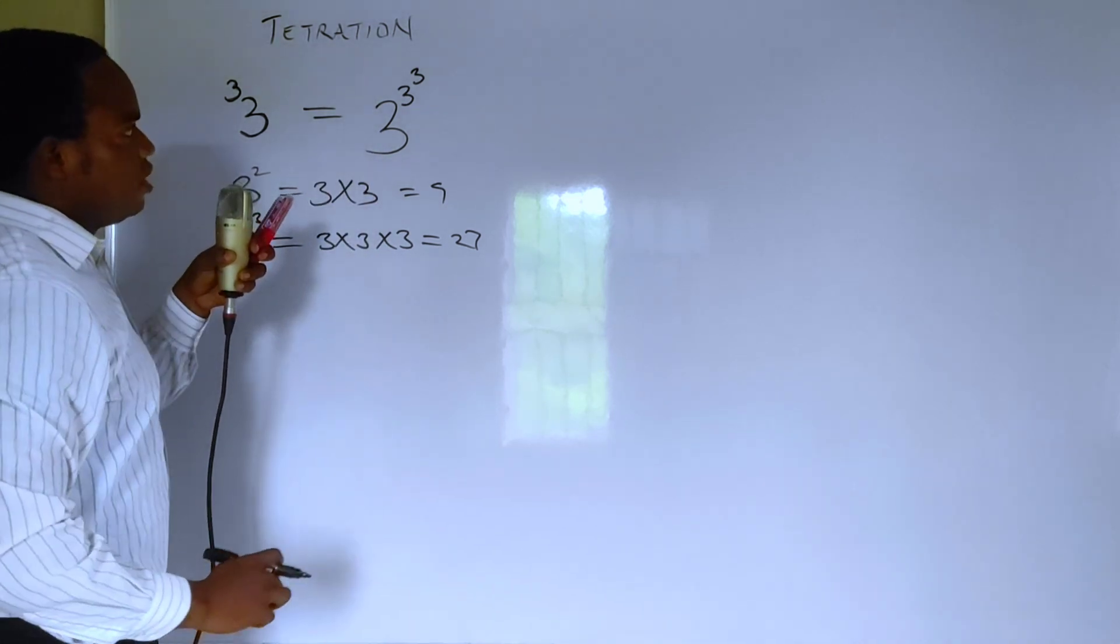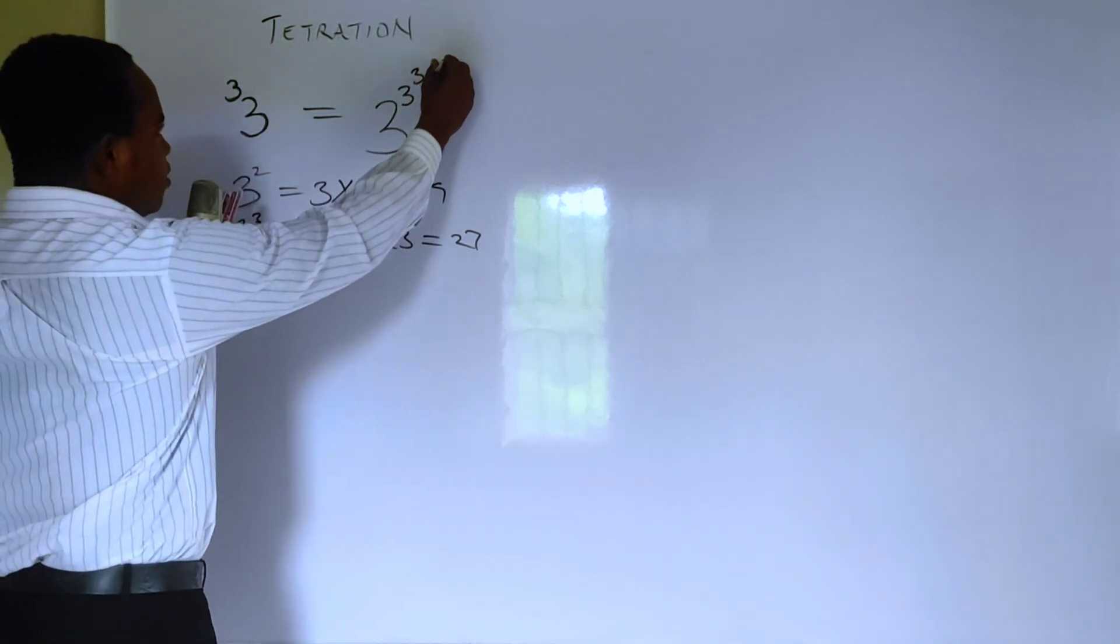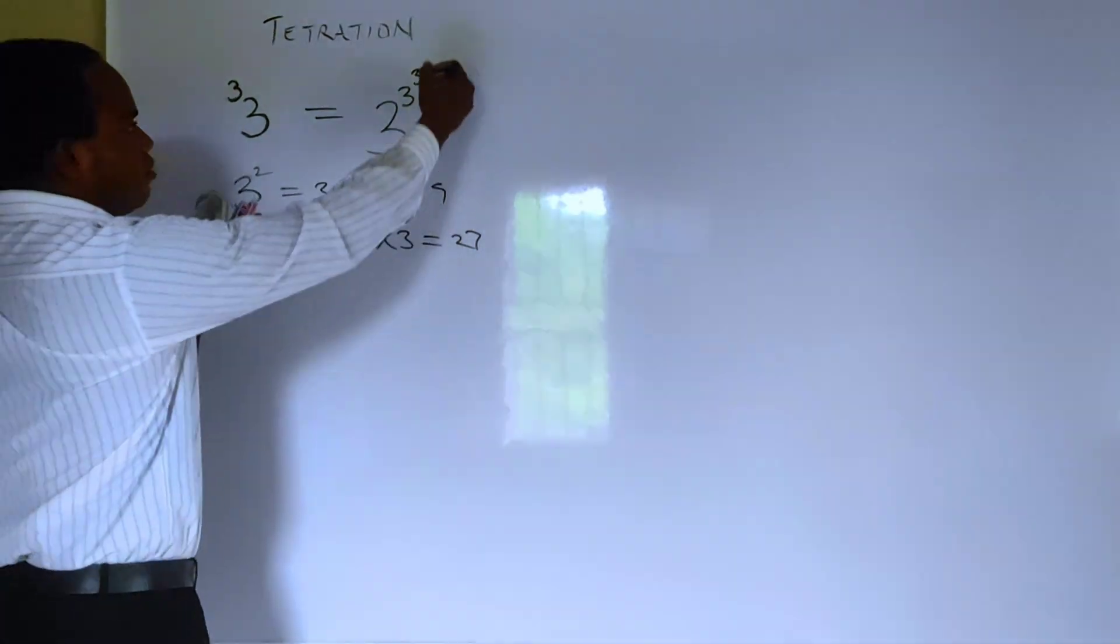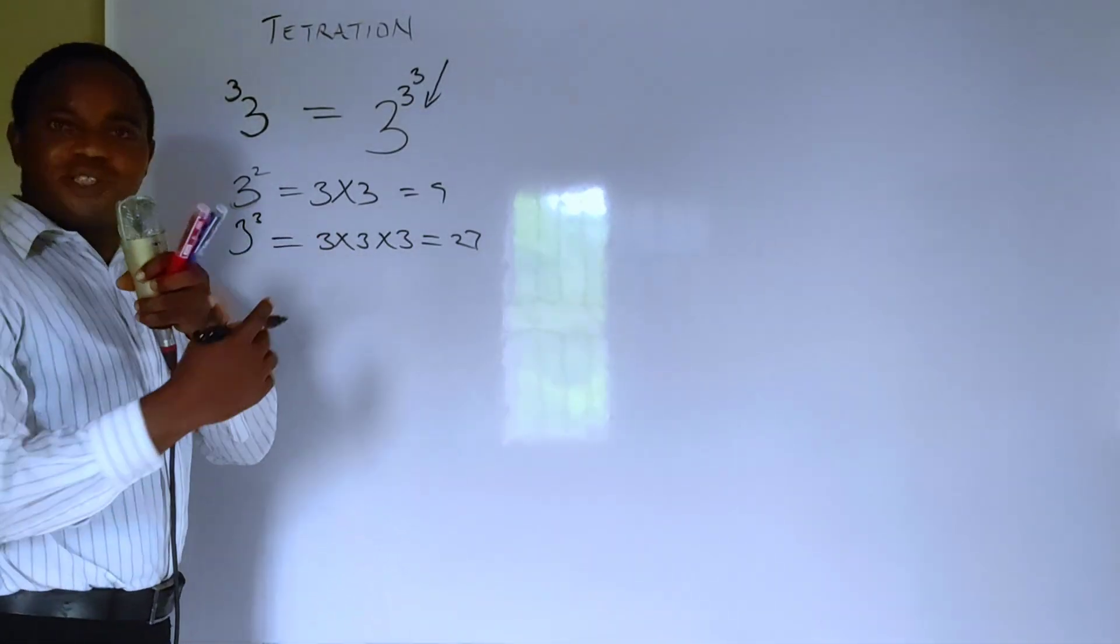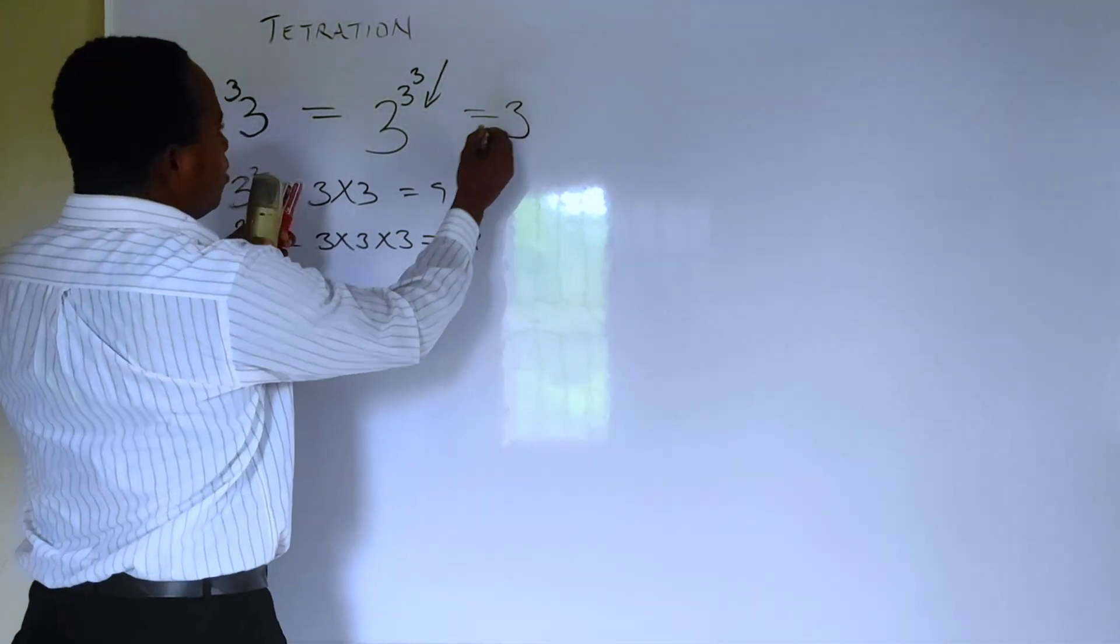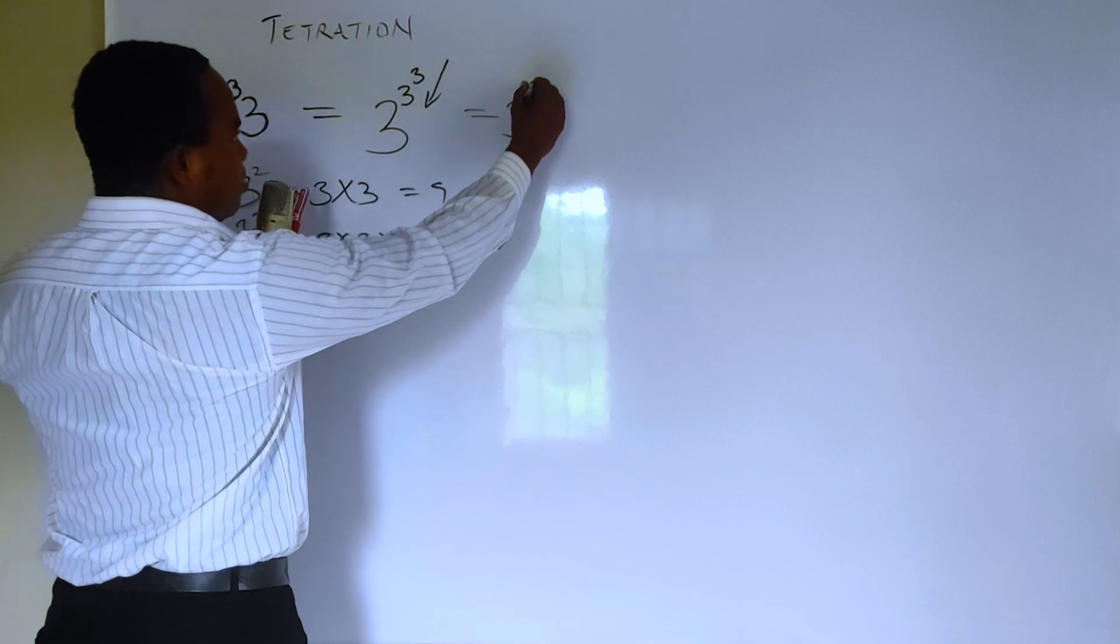You are going to solve this from the top down to the bottom, so you start from the top here. Well, let's do this one. So this is going to be 3 raised to power 3 raised to power 3.